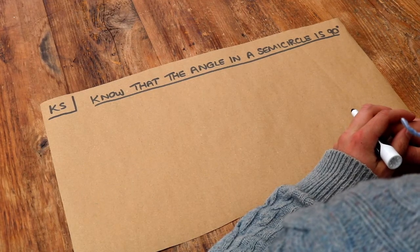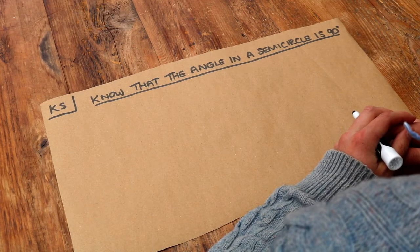Hello and welcome to this Dr Ross Maths key skill video on knowing that the angle in a semicircle is 90 degrees.